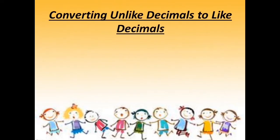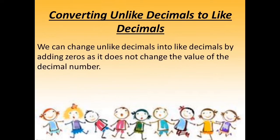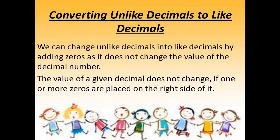Next is converting unlike decimals to like decimals. We can change unlike decimals into like decimals by adding zeros, as this does not change the value of the decimal number. The value of a given decimal does not change if one or more zeros are placed on the right side of it. Let us see this with the help of an example.